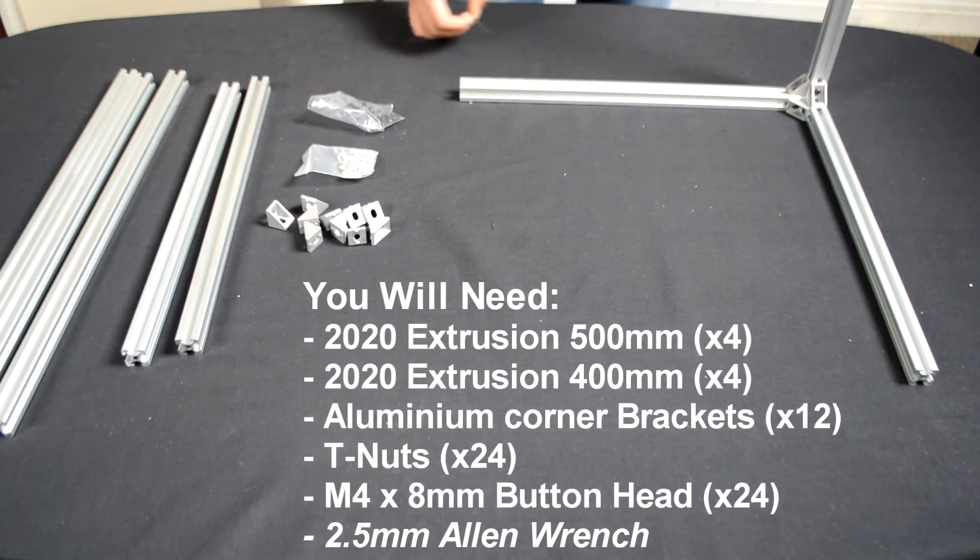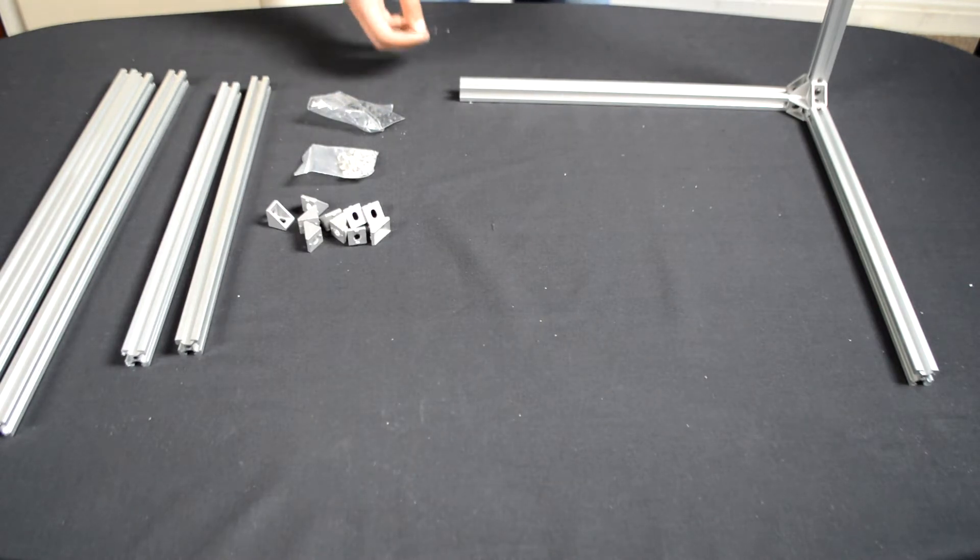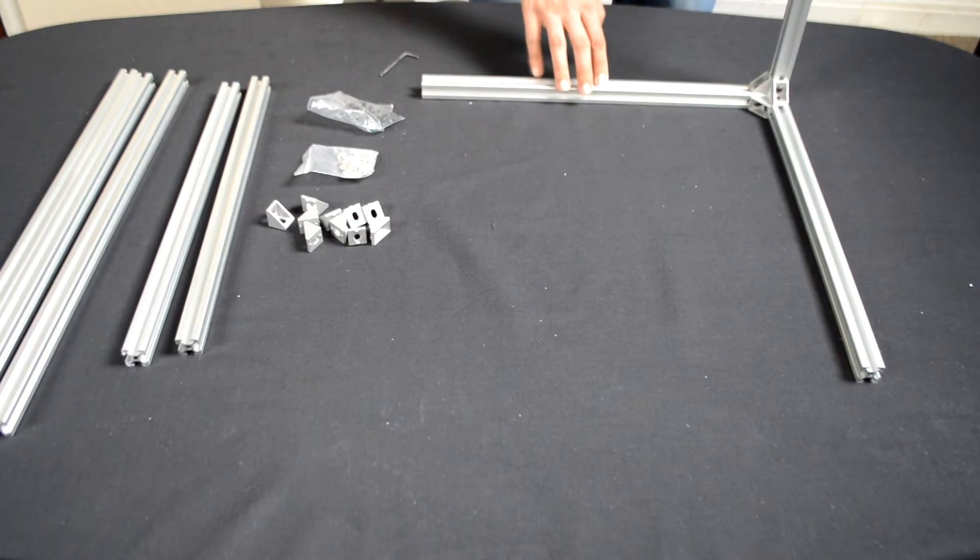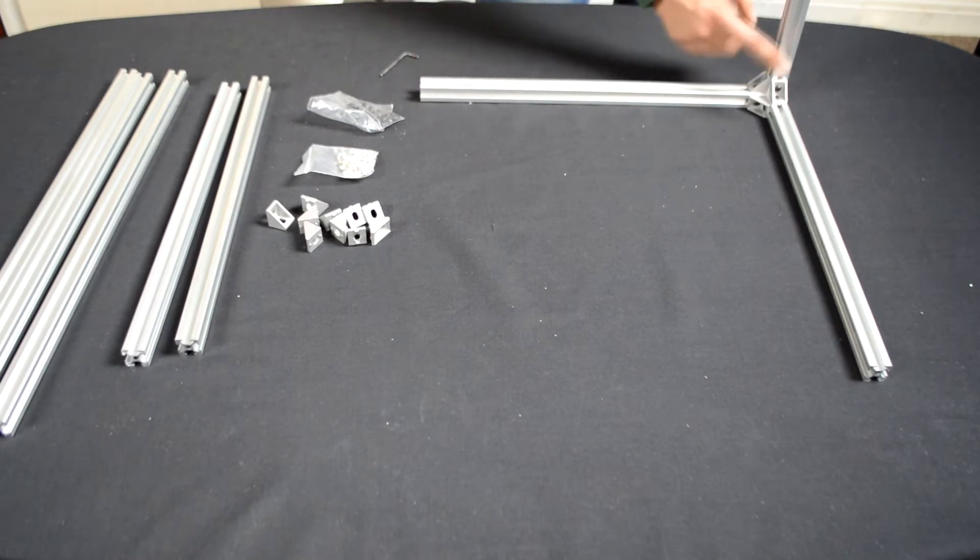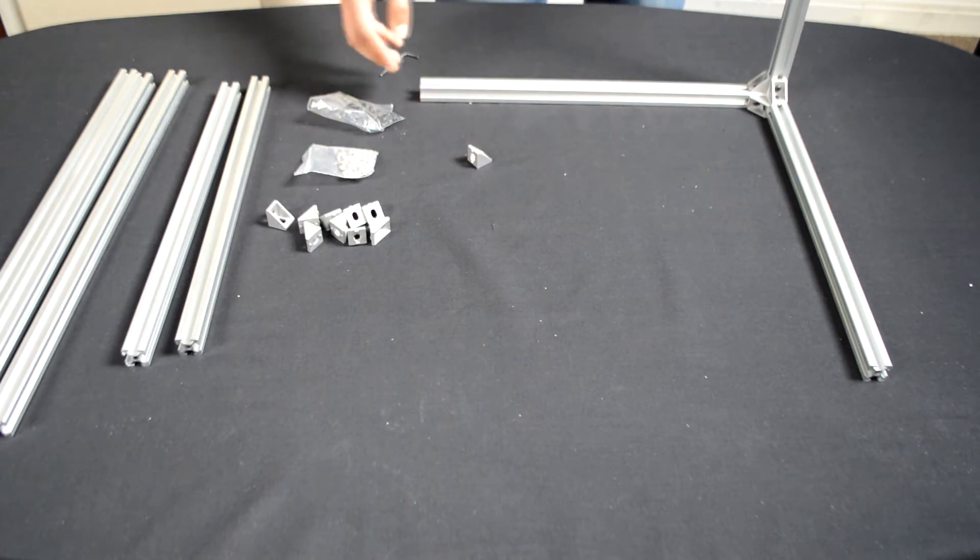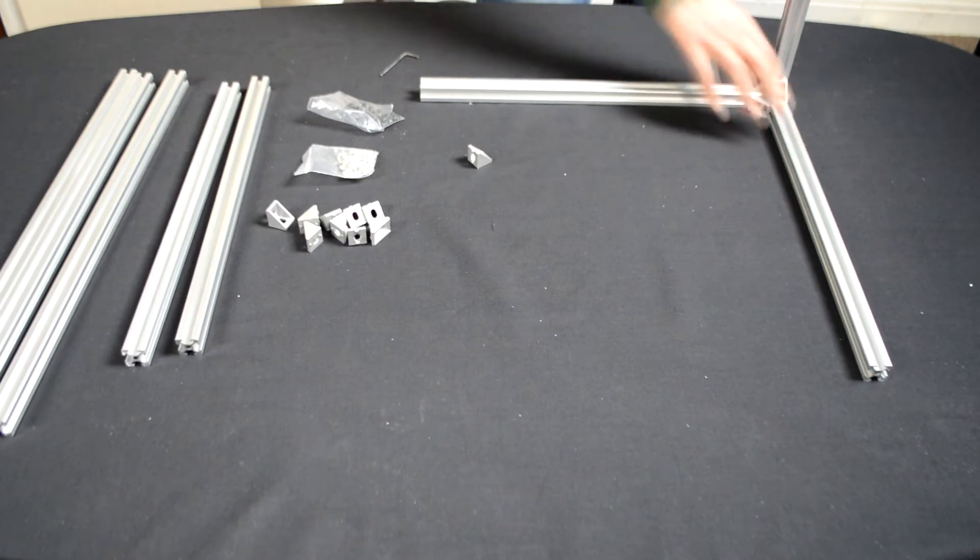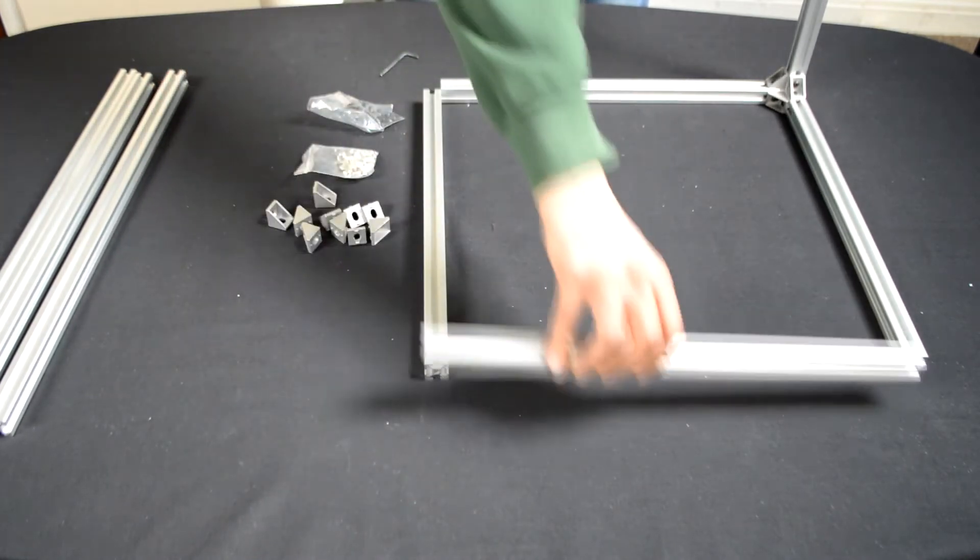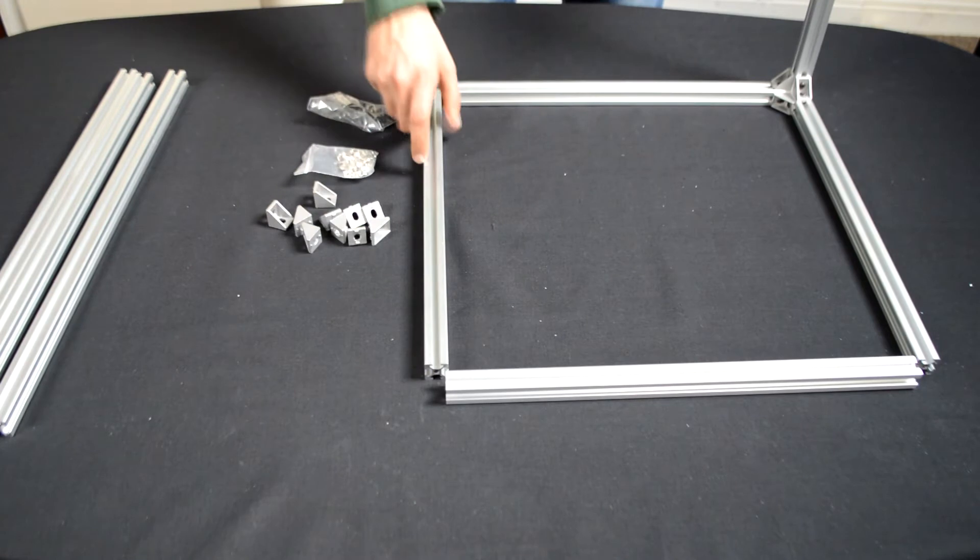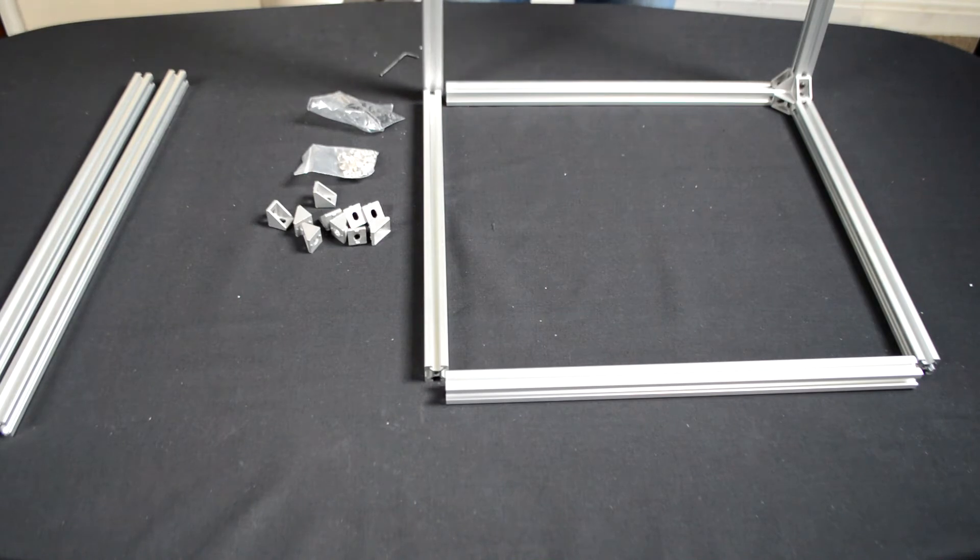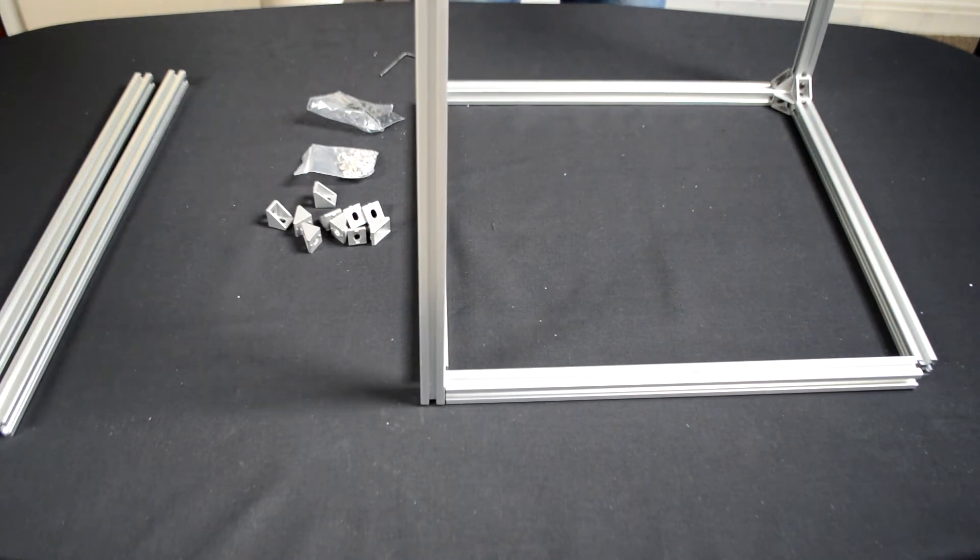The tools you're going to need are only one tool for this step and that's a 2.5mm Allen wrench. So the objective is to put together the frame. The way you put the frame together is by using these corners to assemble these aluminum extrusions. So the way you want to assemble it is to have the four 400mm extrusions to make up a square like this and then have the four 500mm extrusions standing up straight in the corners.